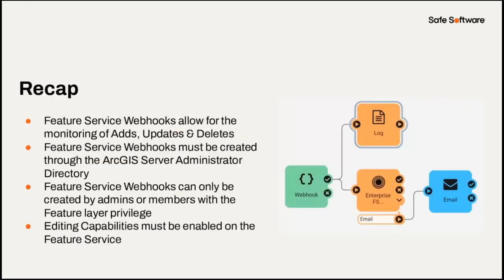To recap: with feature service webhooks we're able to monitor for adds, updates, and deletes on records in a feature service. Feature service webhooks need to be created through the ArcGIS Server Administrator Directory — this differs from organization webhooks. Take advantage of the ArcGIS Portal Webhook Data Getter — it makes it super easy to process that webhook message and parse out information. These webhooks can only be created by admins or members with feature layer privileges, and you need editing capabilities enabled on the feature service in order to create those webhooks.